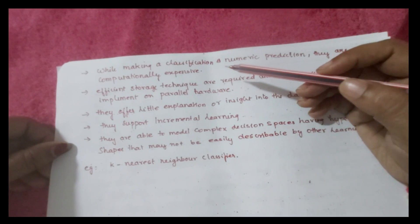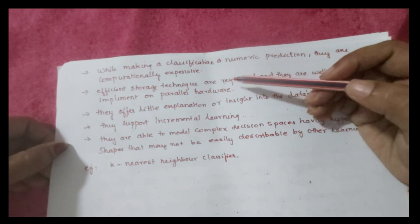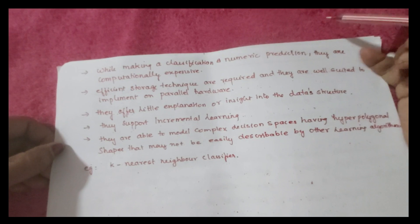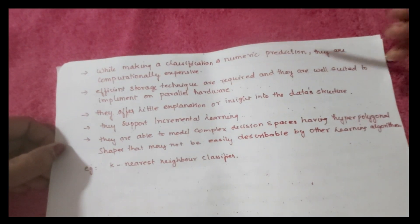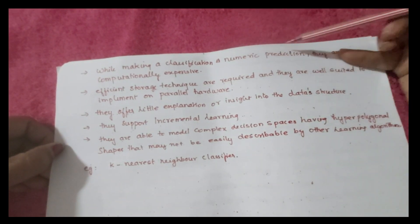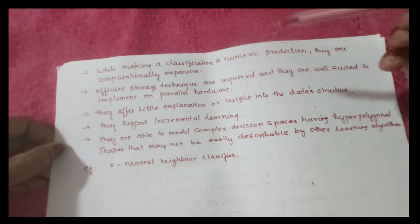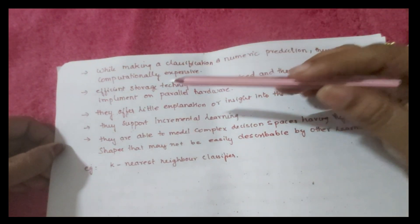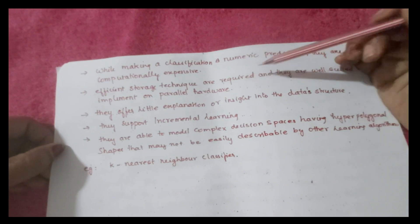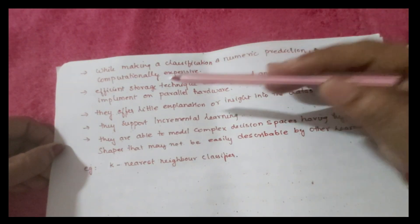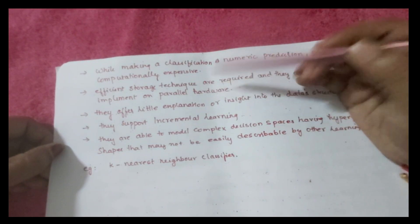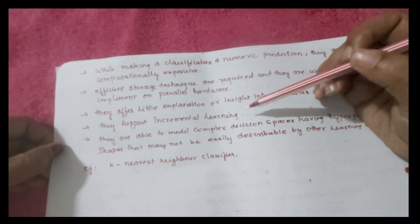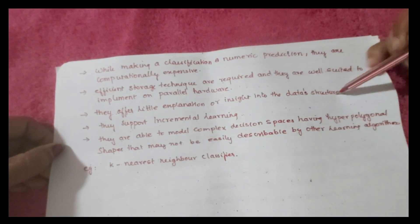While discussing lazy learners we should specify some of their peculiarities. For classification and numeric prediction, they are computationally expensive; efficient storage techniques are required. They are well suited to implement on parallel hardware, and they offer little explanation or insight into the data structure.